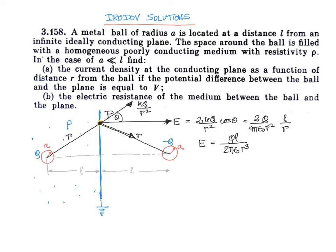The current density at point P is in the same direction as the field. Using j = E/ρ, the current density is j = ql/(2πε₀ρr³). This is the answer to part A.